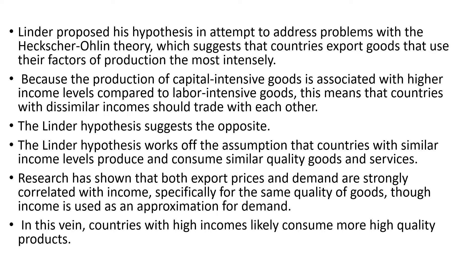This hypothesis is actually an attempt to address the problems posed by the Heckscher-Ohlin model. The Heckscher-Ohlin model states that countries would be exporting goods that use certain factors of production more intensively — so country A would be producing commodity X using labor more intensively because labor is abundant in country A. The production of capital-intensive goods is associated with high-income countries. For example, India is a labor-intensive country and the USA is a capital-intensive country, and the income level of the US is comparatively higher than that of India.